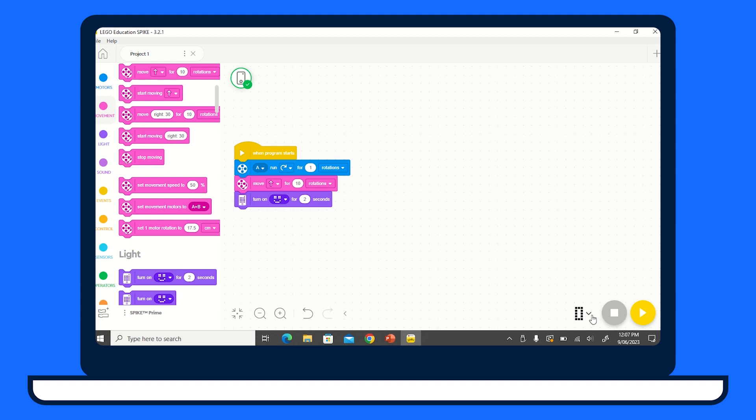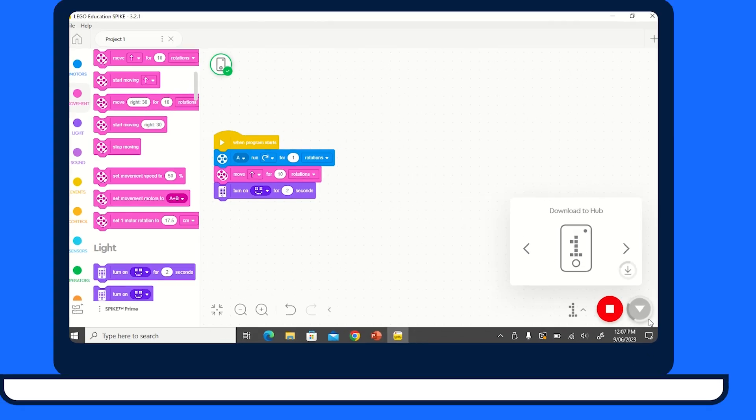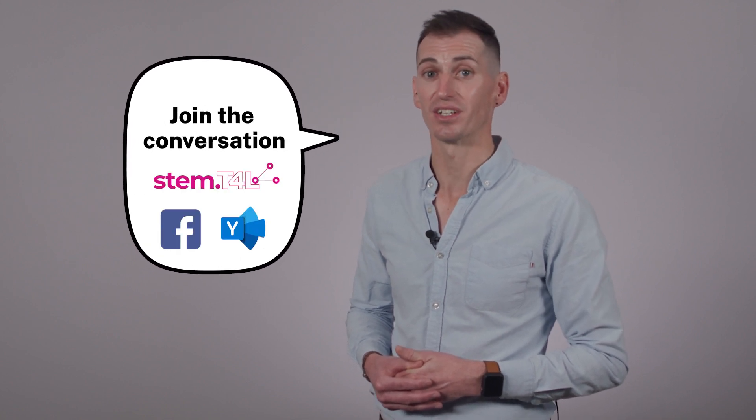Now that your hub is up to date and successfully connected, you can begin downloading code scripts to your hub. The hub can store up to three projects at one time. There are lots more support resources in the stem.t4l library and on our YouTube channel. We'd love to hear how you and your students are using this kit. So join the conversation with other teachers like you in the Facebook group or on the Yemma community. Just search for stem.t4l. Have fun and get creating!